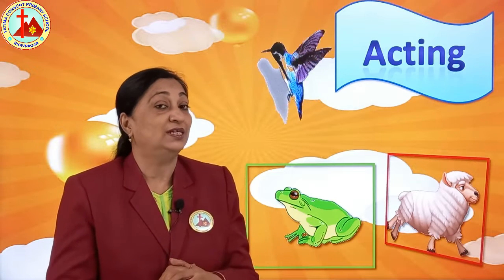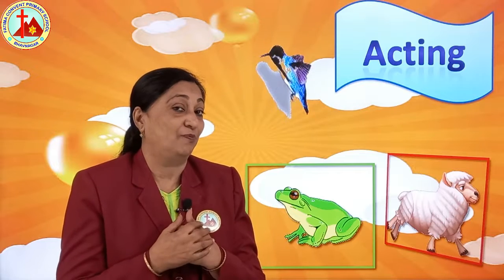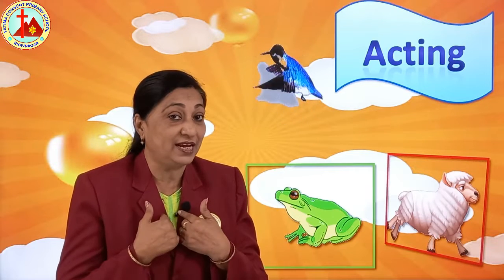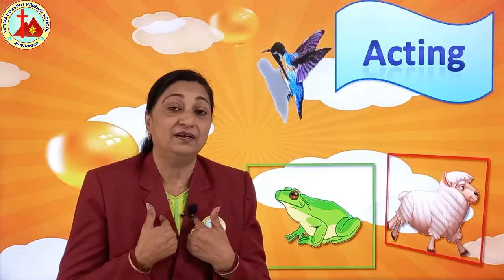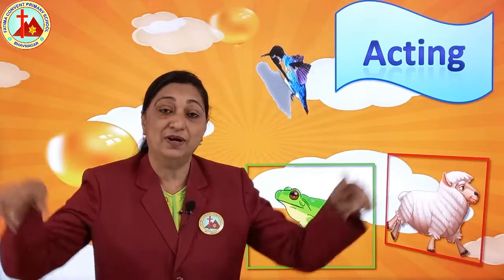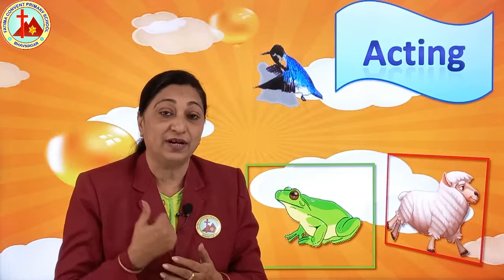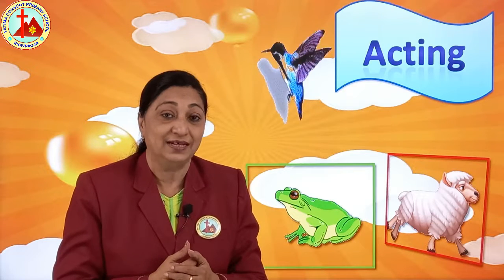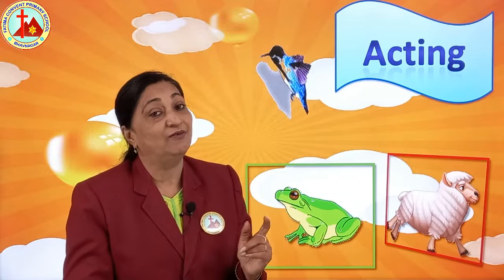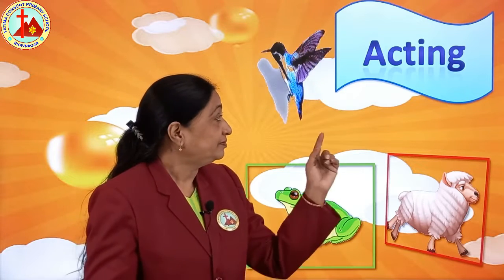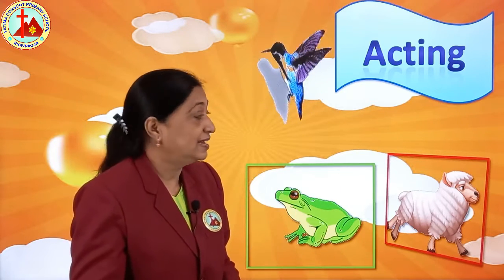But this boy or this girl is saying nobody can copy me — nobody can copy me at all. Yes, see, we can copy the bird: the bird flies so we can fly like this, but the bird cannot copy what I am doing, isn't it? So this rhyme is all about that only. So now we will begin. What is the name of the rhyme? Acting. Yes.